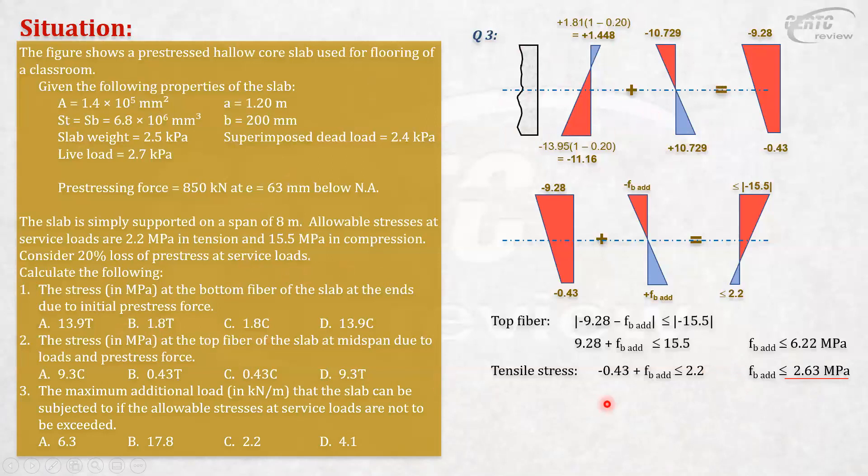This is what we will use: the bending stress due to additional load is the additional moment divided by the section modulus, and that must not exceed 2.63. Substituting the sx of 6.8 × 10⁶, the additional moment must not exceed 17.884.